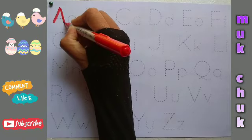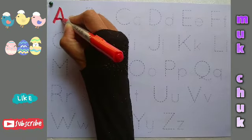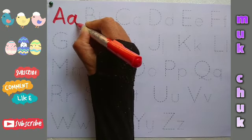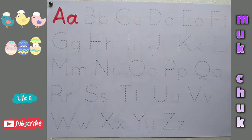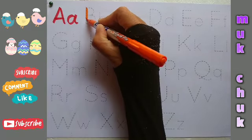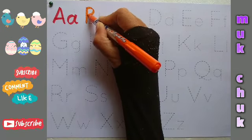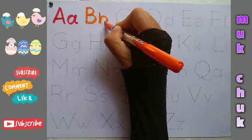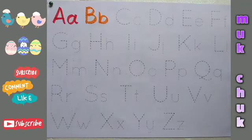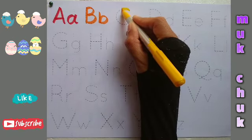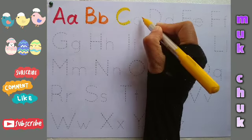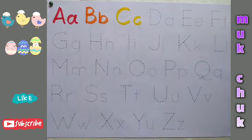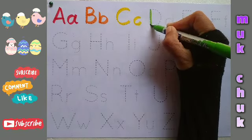A, capital A, small a. A for apple. B, capital B, small b. B for ball. C, capital C, small c. C for cat.